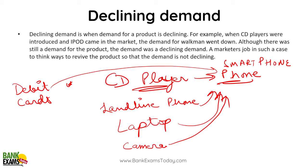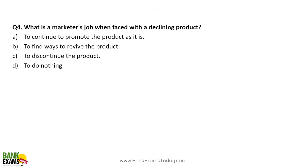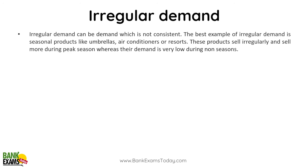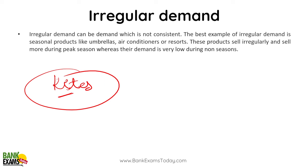The marketer's job when faced with a declining product is to find ways to revive it. Now, irregular demand. Kites are a good example. In Punjab, India, people fly kites in a specific week in mid-January for about a week or 10 days. So the demand for kites is irregular and you don't know exactly how much demand there will be.